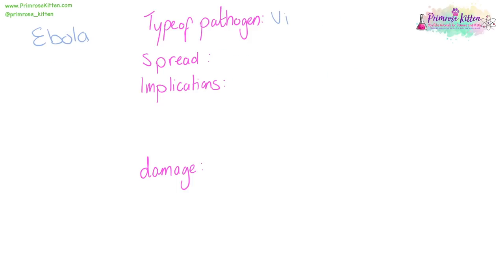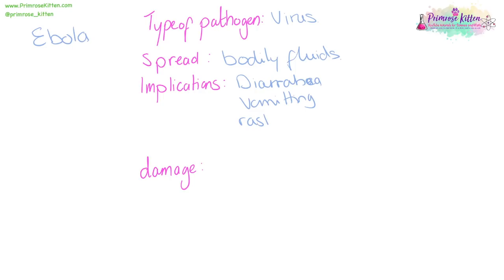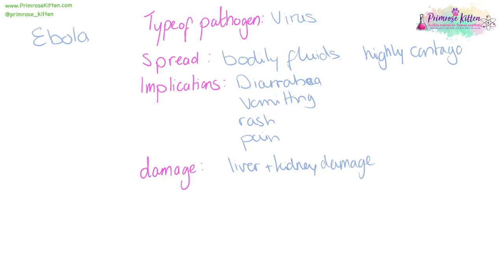Ebola is a virus. It is going to be spread by bodily fluids — so vomit, blood, stuff like that. It is going to lead to diarrhoea, vomiting, rash, pain, and then your liver and your kidneys are going to stop working. It is very unpleasant and highly contagious.